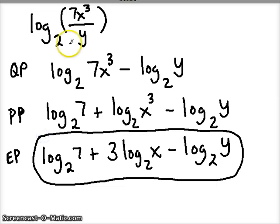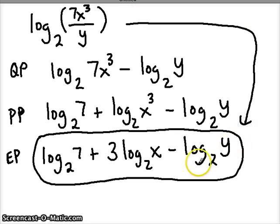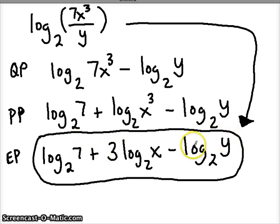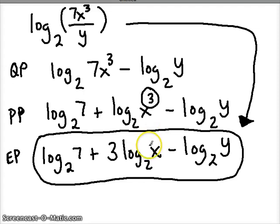So we took this quotient log expression and rewrote it into what is called a sum and difference of logs. Sometimes instructions say to simplify and make sure to write all exponents as a sum or difference of logs — meaning don't leave any exponents behind. Use that exponent property to get it all the way down.